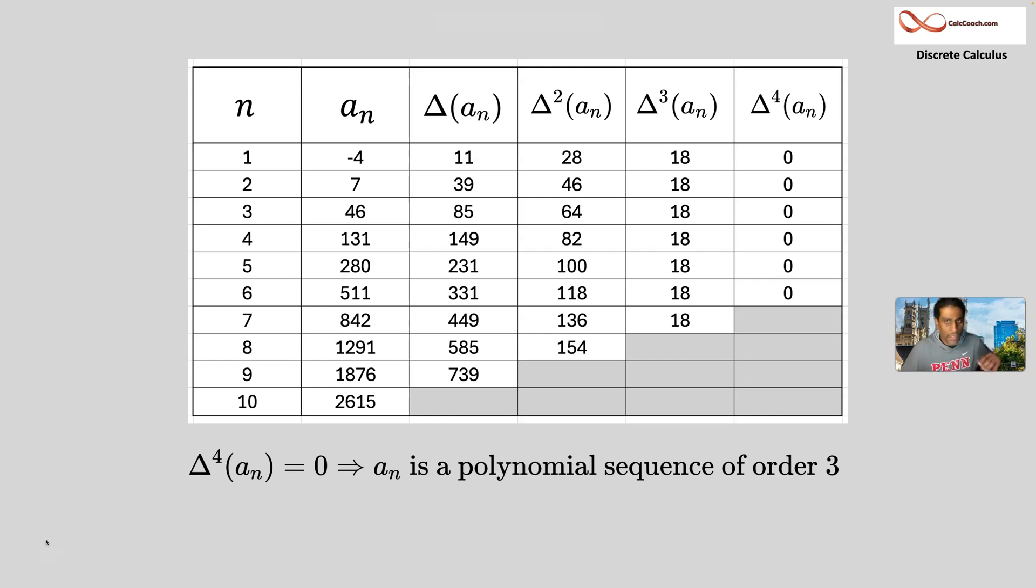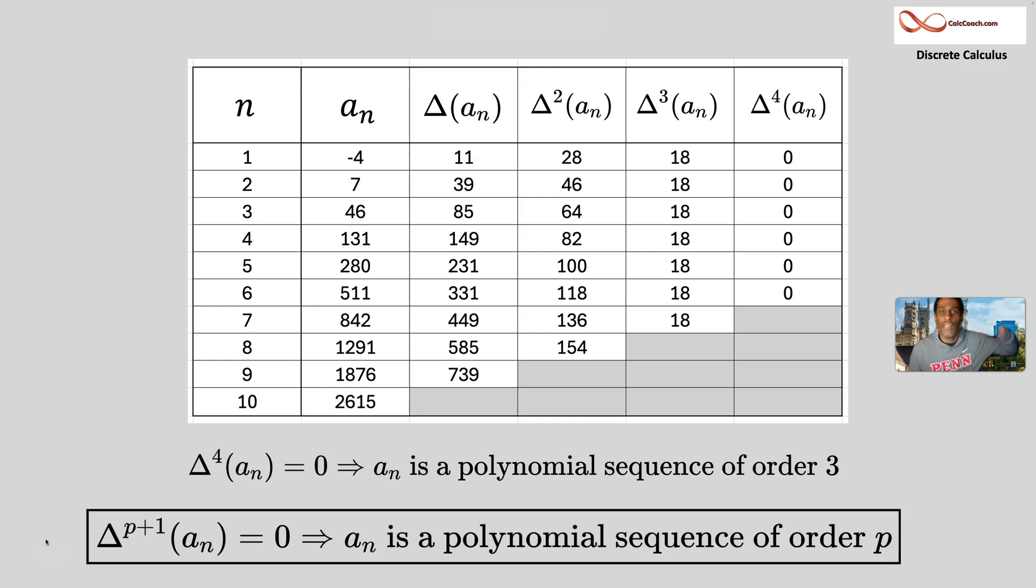So the fourth forward difference applied to whatever the sequence is, is equal to zero. That means then that not only is it a polynomial sequence, we can say it's a polynomial sequence of degree three. In general, if it takes your p plus one times to get you to the zero sequence, you definitely have a polynomial and it's of degree p.